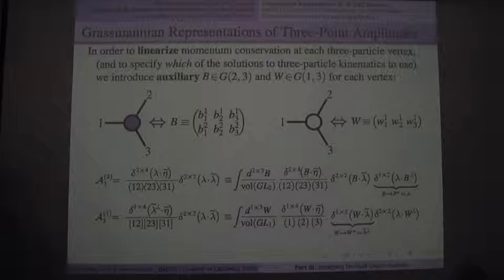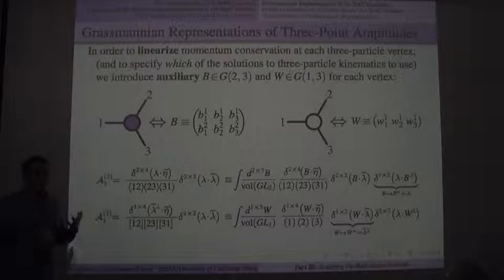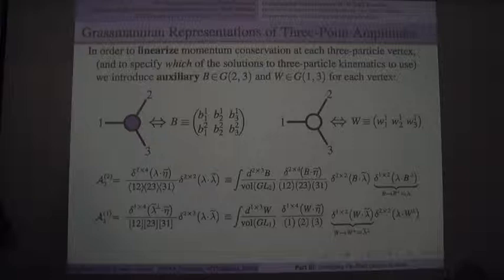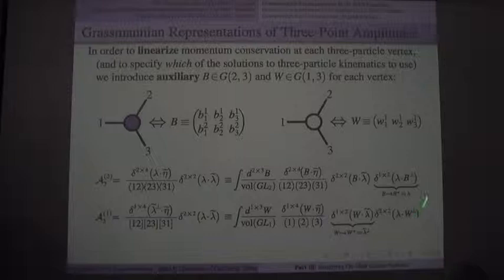The key advantage is that now momentum conservation is a separately linear system of equations in lambda and lambda-tilde. Where does the Grassmannian come in? It's actually trivial: it's a linear system of equations. As soon as you have a linear system, it's invariant under adding equations to each other or multiplying — F=0 is the same as αF=0. So you always get a GL_K redundancy if you have K equations, and because we can write momentum conservation in this linearized form, there's a Grassmannian involved.